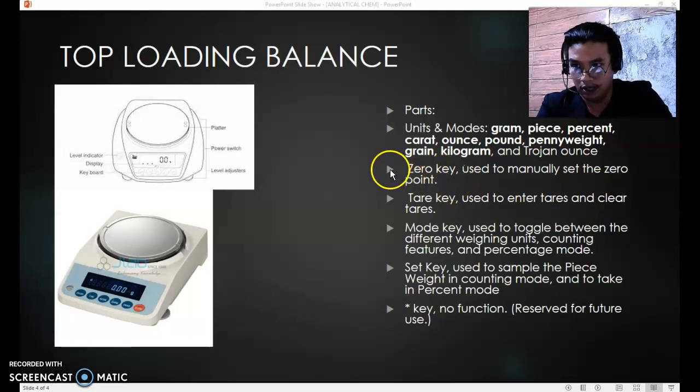Next are the keys located on the keyboard. Zero key is used to manually set the zero point. Tare key is used to enter tares and clear tares. Mode key is used to toggle between the different weighing units, counting features, and percentage mode.